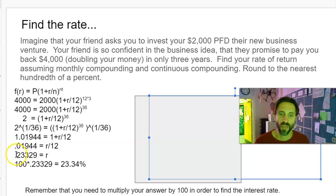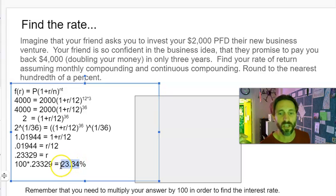So you've got 0.23329 equals R. This is rounded to the nearest hundredth of a percent. This is the rate in decimal form, so if you have a percent, you have to multiply it by 100 to figure out the rate in percent format. So 100 times 0.23329 gives you 23.34 percent, and in Canvas you would just enter 23.33—that'd be correct.